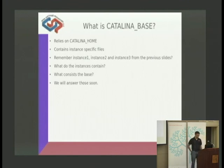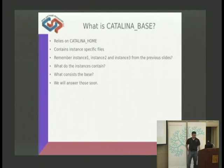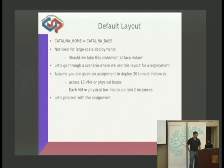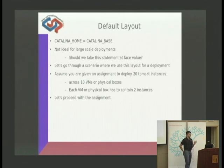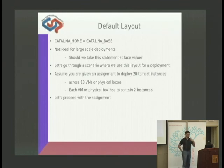Catalina Base relies on Catalina Home and can contain instance-specific files. An instance-specific as in you may have three or four Tomcat instances — instance-1, instance-2, instance-3, etc. — and you would have certain files applicable residing there. In the case of a default installation, Catalina Home and Catalina Base point to the same thing: /usr/local/apache-tomcat-6.0.35. This is not ideal for large-scale deployments because it is a base install — you've just downloaded Tomcat, exploded it, and haven't done anything with it.